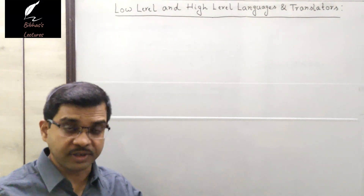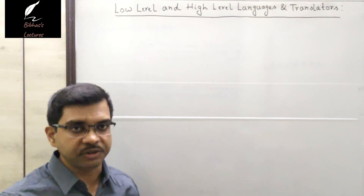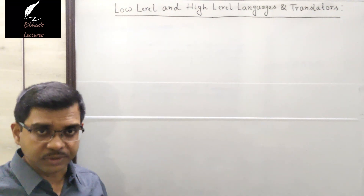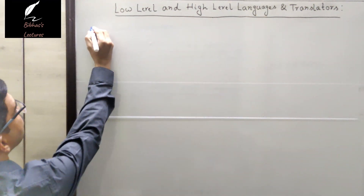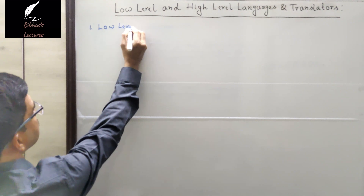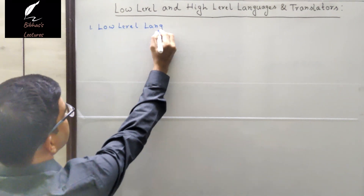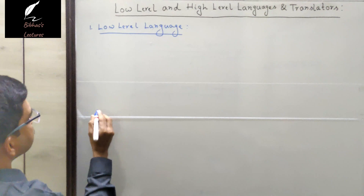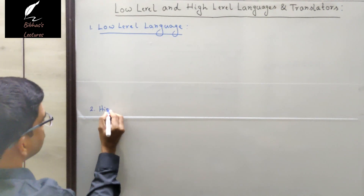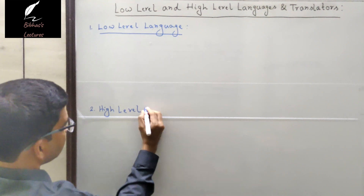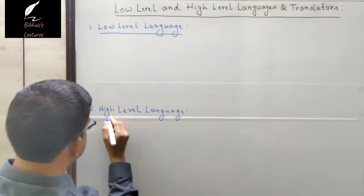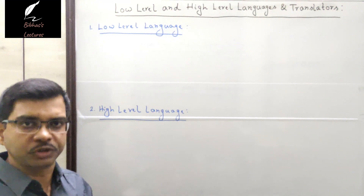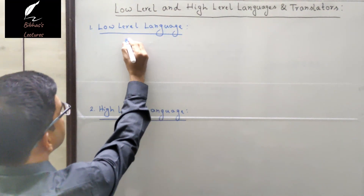Computer language can be broadly classified into two different categories. Number one is low-level language, and another one is high-level language. Low-level language can again be classified into two different categories. Number one is machine language.